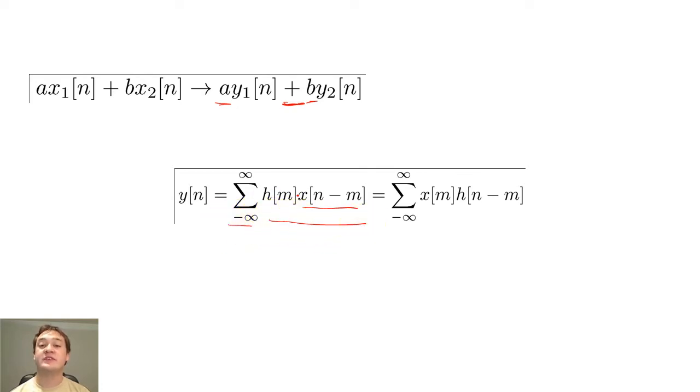If the superposition property did not hold for the system, we cannot appropriately recombine these parts.